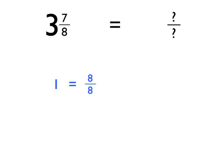One is the same as eight eighths. So three must be the same as three lots of eight eighths, or 24 eighths altogether.